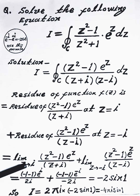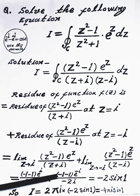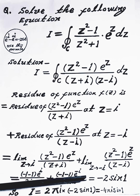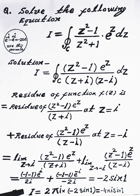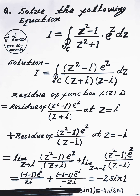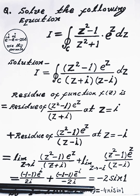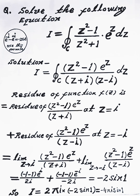After solving, the total residue equals minus 2 sin(1°). The contour integral I equals 2πi multiplied by the residue, minus 2 sin(1°), giving the final answer: I equals minus 4πi sin(1°).